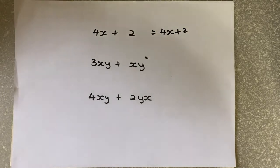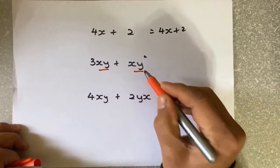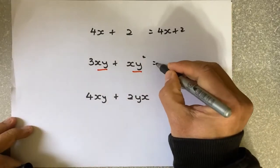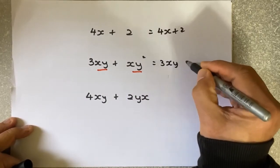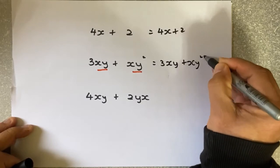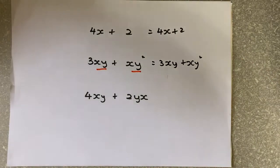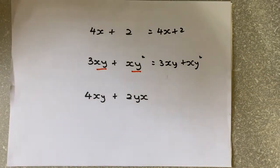How about the next one? 3XY plus XY squared. Is this the same family? Are they the same letters? No, they are not. So the answer will remain 3XY plus XY squared because they are different families, different combinations of letters, and cannot be added up.